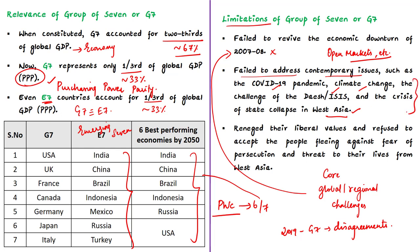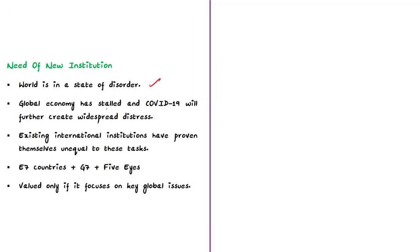There were significant disagreements among G7 members, and one recent summit concluded without a joint statement. Disagreements arose over addressing climate change, the refugee crisis, and related issues. G7 countries in Europe have failed to give leadership in accepting refugees fleeing persecution from West Asia, which the author finds ironical given they project themselves as torchbearers of human rights. The world is in a state of disorder, the global economy has stalled, and COVID-19 is expected to create further widespread distress.